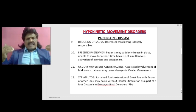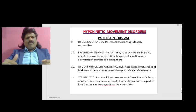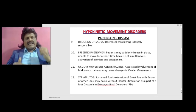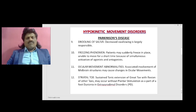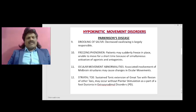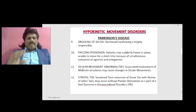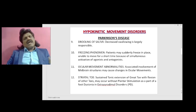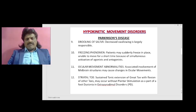Freezing phenomenon: the patient may suddenly freeze in place, unable to move for a short time, because of simultaneous activation of agonists and antagonists. Ocular movement abnormalities may occur due to lesions in the saccadic pathway, which also goes to the basal ganglia and the midbrain. Striatal toe: sustained tonic extension of the great toe with flexion of the other toes may occur even without plantar stimulation, as part of foot dystonia in extrapyramidal disorders.